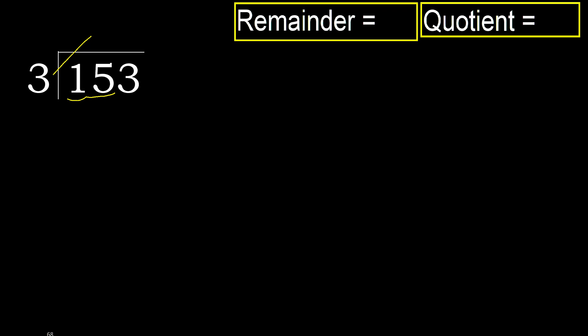But not greater. 3 multiply by 6 is 18 — 18 is greater. 3 multiply by 5 is 15 — 15 is not greater. Subtract 0, next.